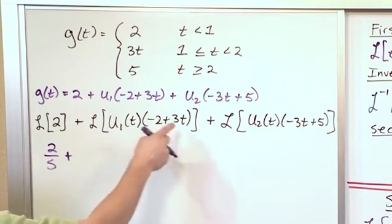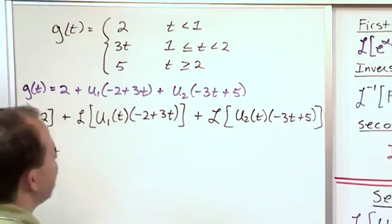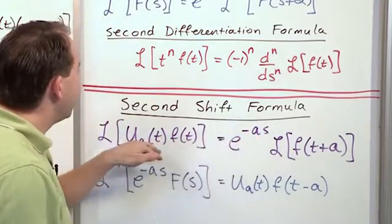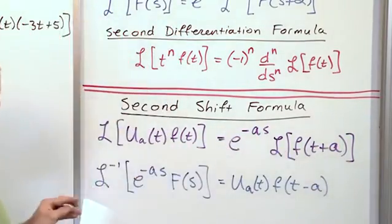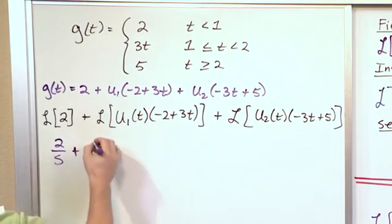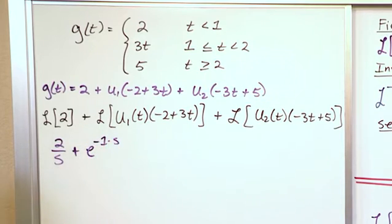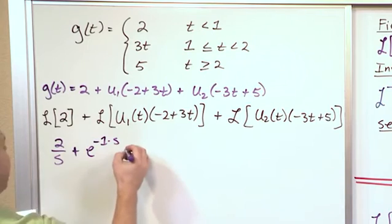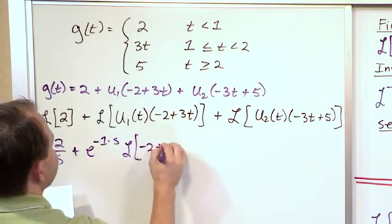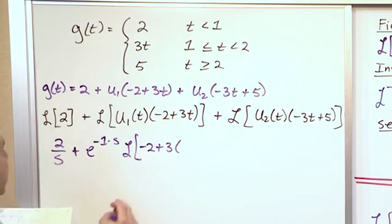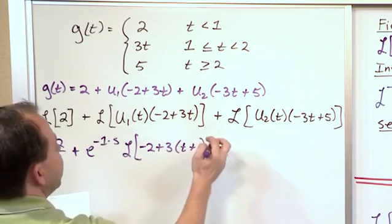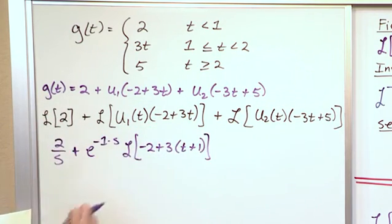For all of these other ones, we have these properties to deal with — we have step functions. Wherever we have a step function, we write it as e to the minus whatever the time is times s, and then we shift by t plus a, then take the Laplace Transform. So here we'll have e to the minus 1 times s, and then we still have to take the Laplace Transform of what's left over: negative 2 plus 3 times t plus 1. We shift by however far in time the unit step was.